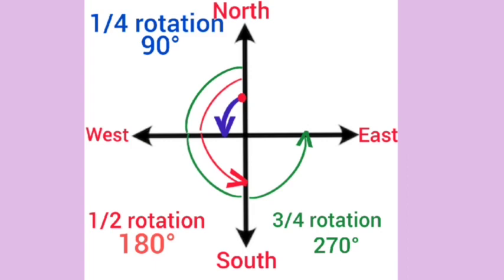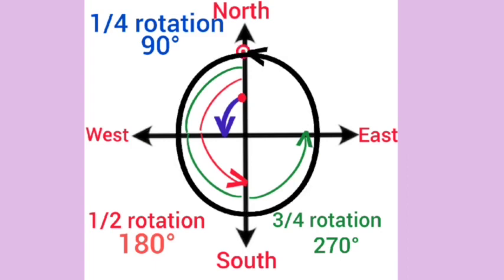And, as we move anticlockwise from north back to north, one complete rotation is covered, means 360 degree.